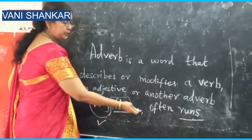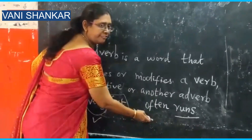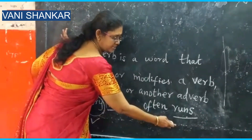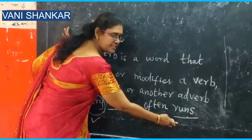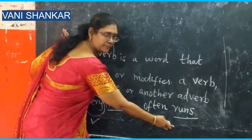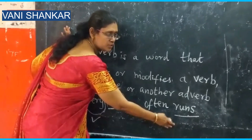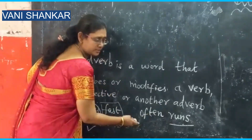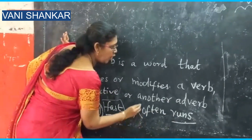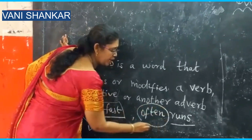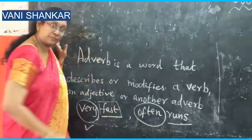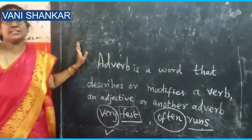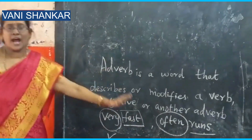Again, you have 'often runs.' 'Runs' is a verb, so somebody is running often. Here, 'often' is the adverb — often is the adverb modifying the verb.